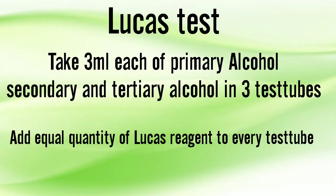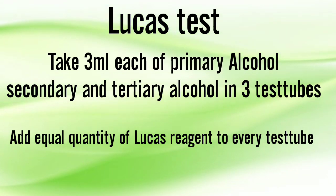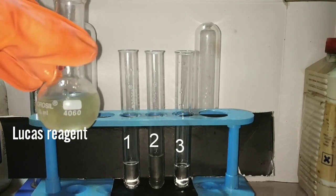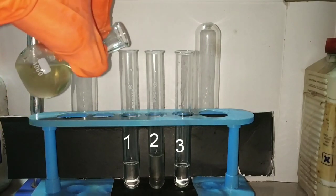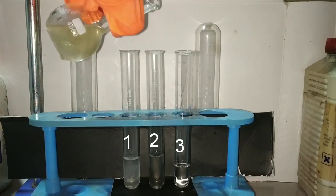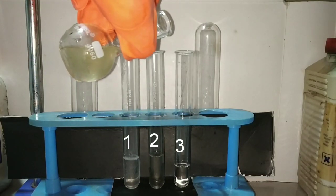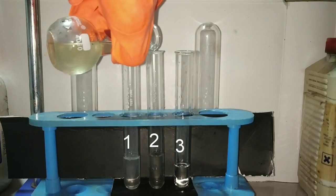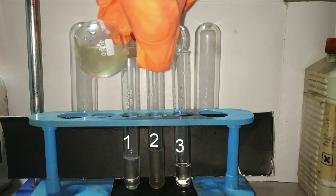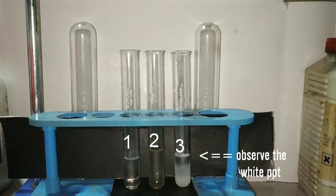Now we go to the Lucas test, where we take 3 milliliters each of the primary, secondary, and tertiary alcohol in separate test tubes and add equal quantities of Lucas reagent, looking for any formation of precipitate. In the primary alcohol there is no precipitate formed. In the secondary alcohol also there is no precipitate, but in the tertiary alcohol you can see that there is formation of a white precipitate.